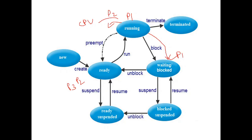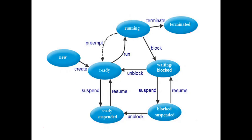The process P1 which has moved to the waiting state — if the printer is free, it will immediately be assigned to P1. But if the printer is not free and is being used by another process, then P1 has to wait until the printer becomes free. This is how a process is moved from running state to waiting state when it wants to use some resources.